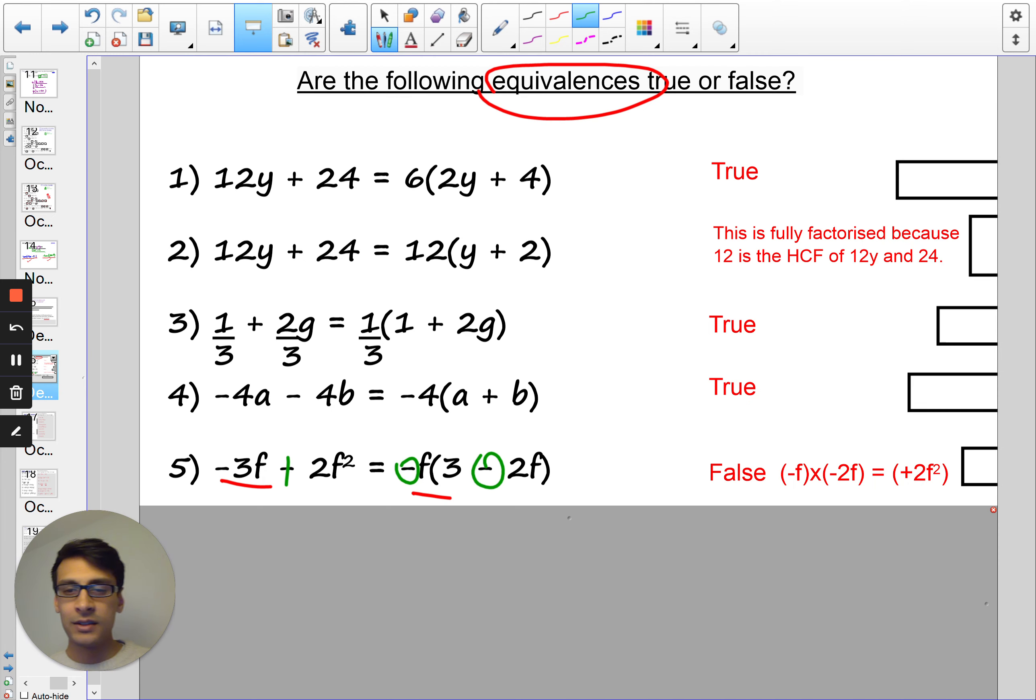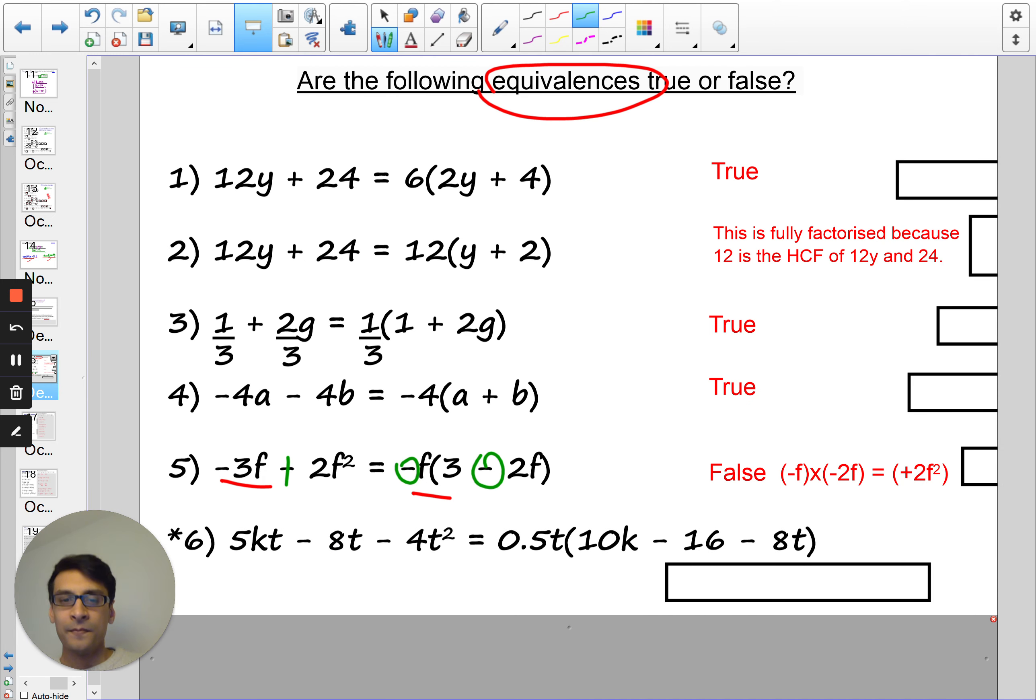Okay. Question 6. Let me just try a quick extension question here. Is this true or not? You can do this in your head. Okay. So you may have noticed a half times 10, half t times 10k. Well, half times 10 is 5. And t times k is kt or tk. So that's correct.